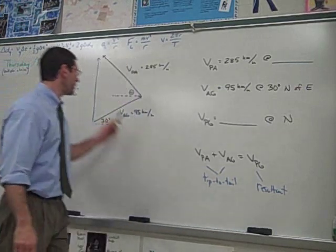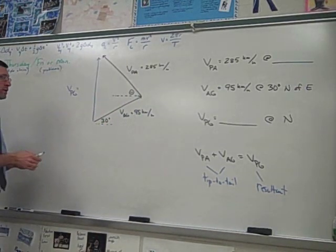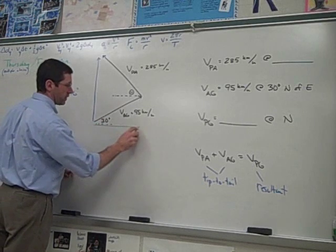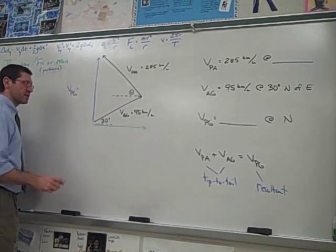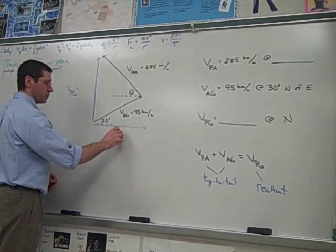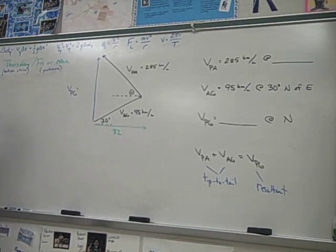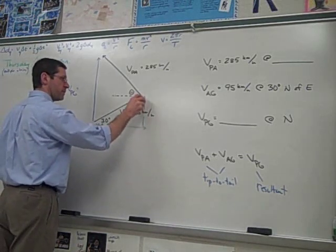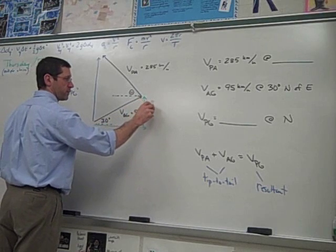So we have one vector that we can break down and get the components for. So let's do that. We get the x component of this is 82, and the y component of this is 48.